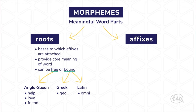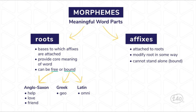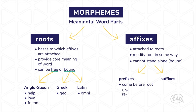Now let's take a closer look at affixes. Affixes are morphemes that can be attached to roots to modify them in some way. An affix cannot stand alone as its own word. Affixes can be categorized as prefixes and suffixes. A prefix comes before the root of a word — examples include un-, re-, and dis-. A suffix comes after the root of a word — some examples are -ed, -ful, and -ing.